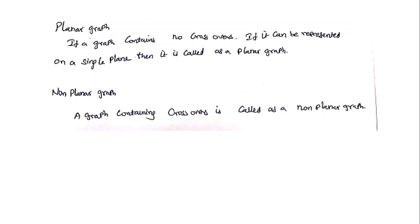Next, a planar graph: if a graph contains no crossovers, it is called a planar graph and can be represented in a single plane. A graph which cannot be represented in a single plane and has crossovers is called a non-planar graph. That's all for now — we'll be discussing how to draw a tree in the next video. Thank you.